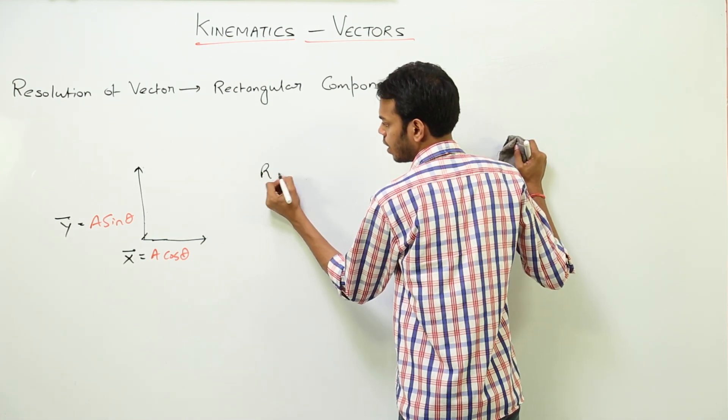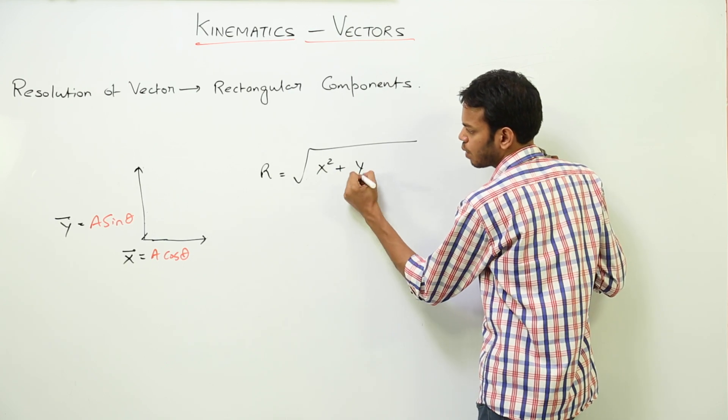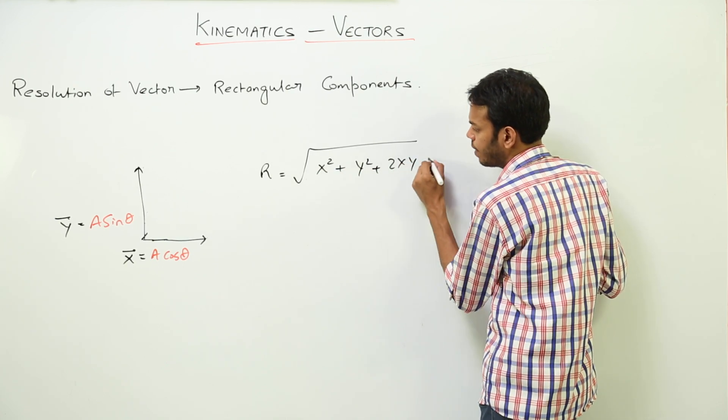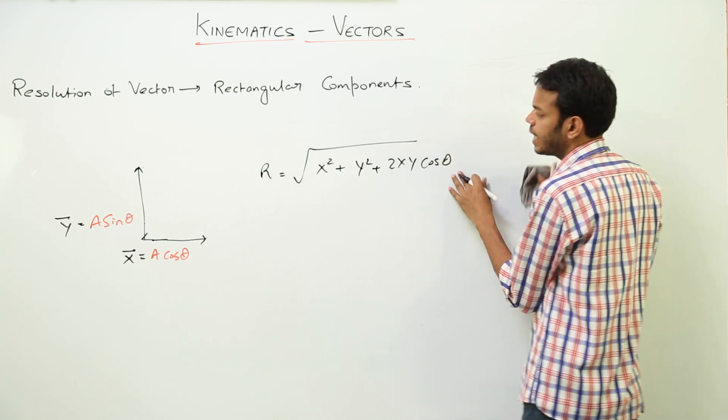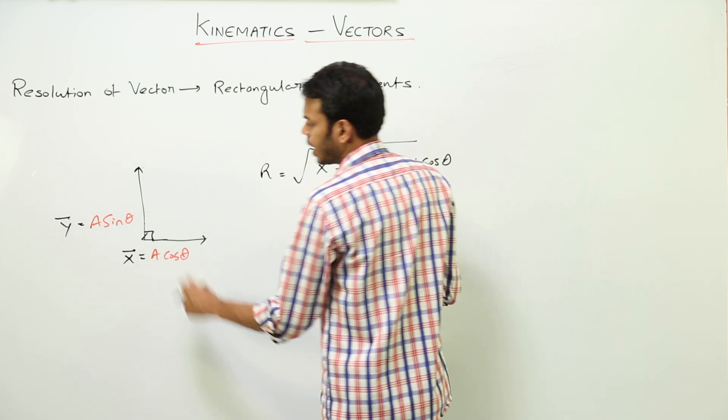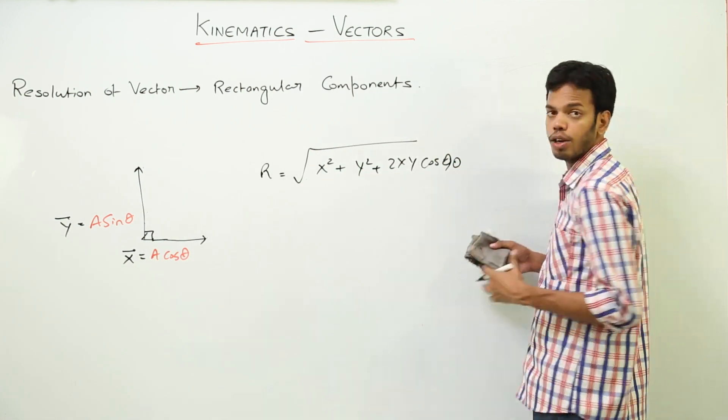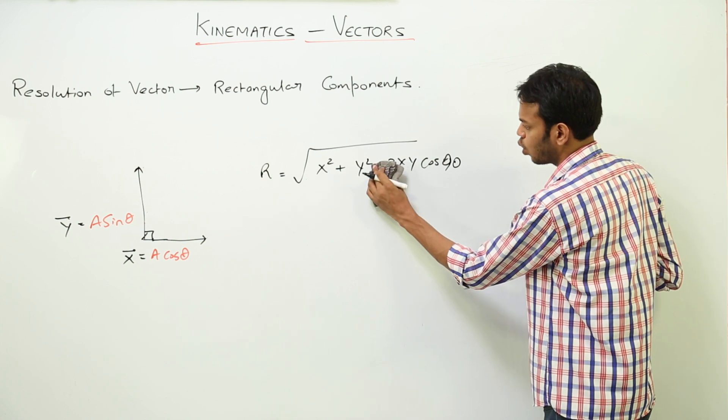The formula for resultant is under root, first vector X square, that is X square plus Y square plus 2XY cos of theta. Theta is the angle between vector X and vector Y. At this time, the angle between them is 90 degrees, so this thing becomes 90 degrees. And we know that cos 90 is 0, so this whole term becomes 0.